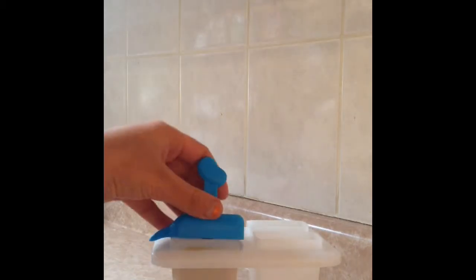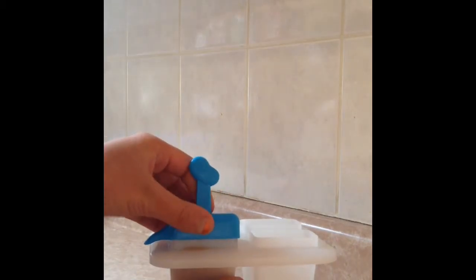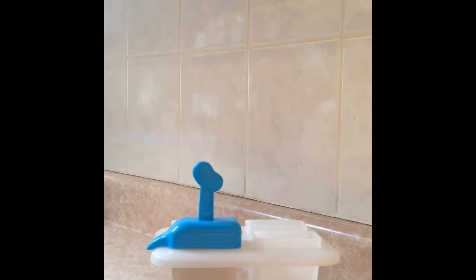Now, get your Coca-Cola or whatever you're using, and fill up the rest of the half that is empty in your little popsicle holder. Now, place your popsicle cap on top of the popsicle holder, and you're pretty much almost done.